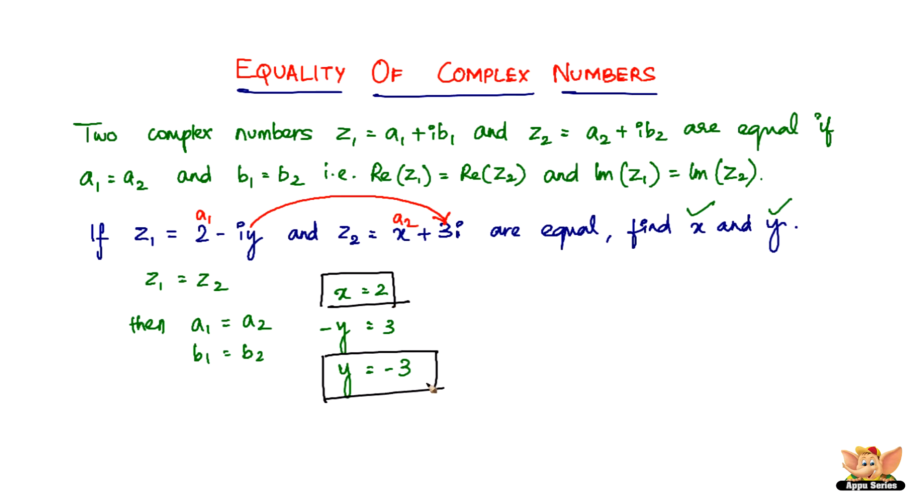So we found the answers: x = 2 and y = -3. This is how we use the concept of equality of complex numbers in solving problems, and you can keep this as an illustration of the equality of complex numbers.